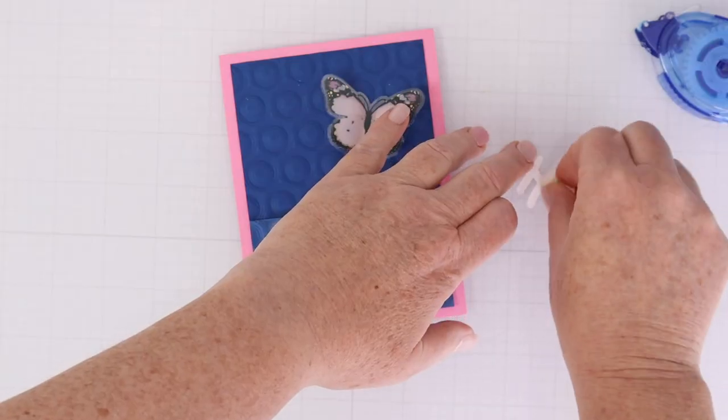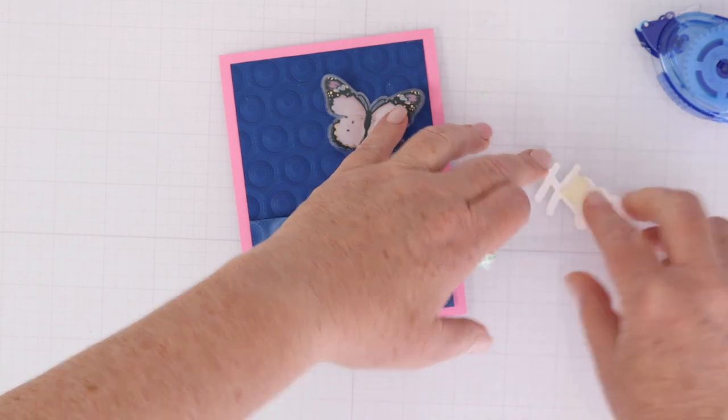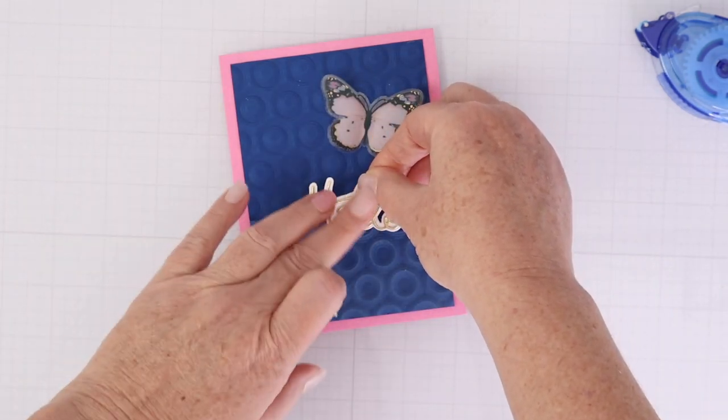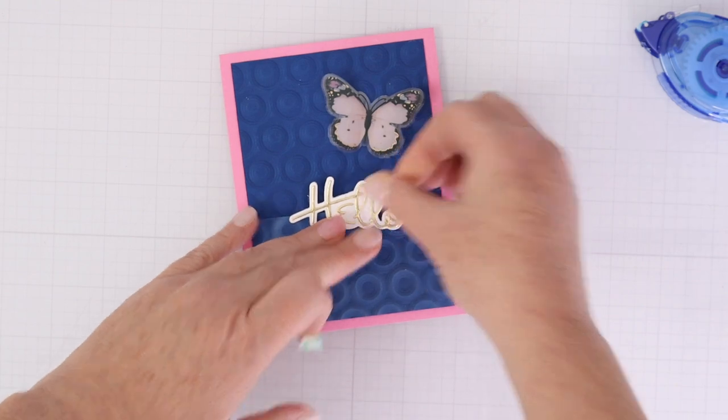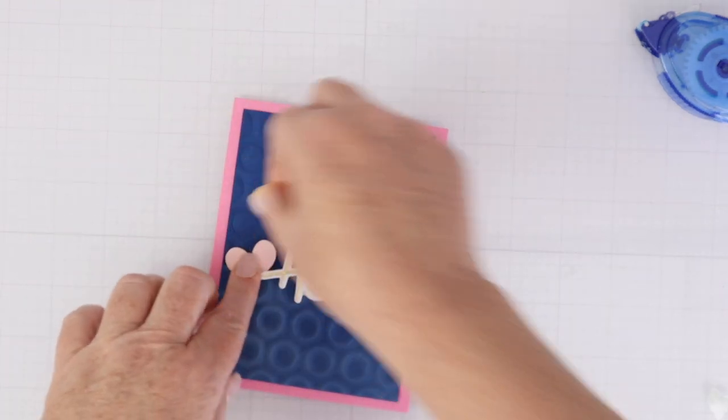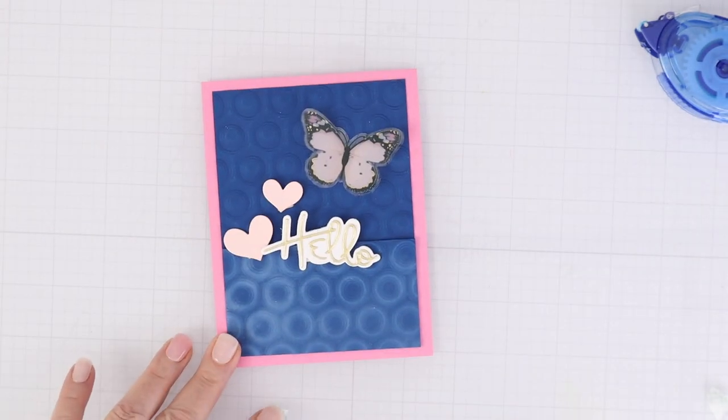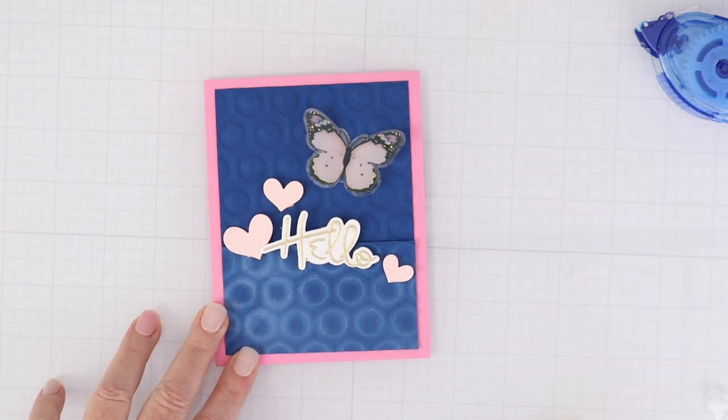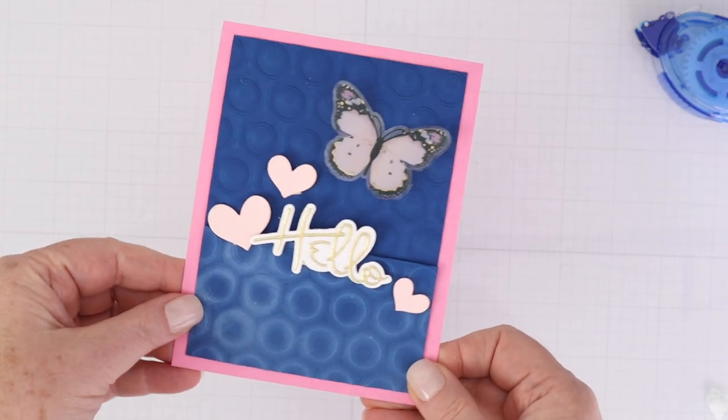But basically I am just so happy that I purchased this universal plate system from Spellbinders because it really helped me get my 3D embossing folders back into the mix and not be frustrated every single time I'm trying to figure out a new system of how to get them through my die cut machine. I'm really glad I decided to buy this universal plate system from Spellbinders because it does give you some more options when creating your sandwich which allows you to do lots of embossing, 3D embossing, die cutting, and more.